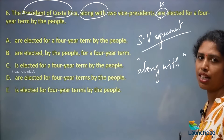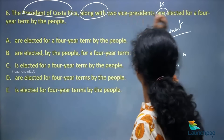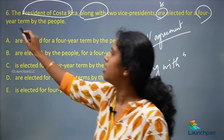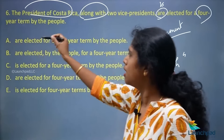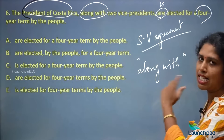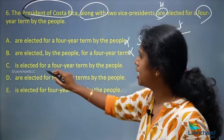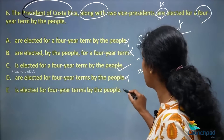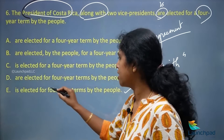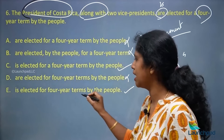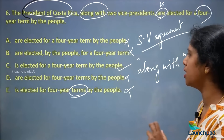Also remember: whenever a measure is preceded by a number, it remains unchanged. '4' is a number, so '4-year' remains as 'year,' not 'years.' Checking the options: 'are elected' — no; 'is elected' — yes. Between 'a 4-year term' and 'a 4-year terms,' we say it does not change. Hence your option C is the right answer: 'is elected for a 4-year term by the people.'